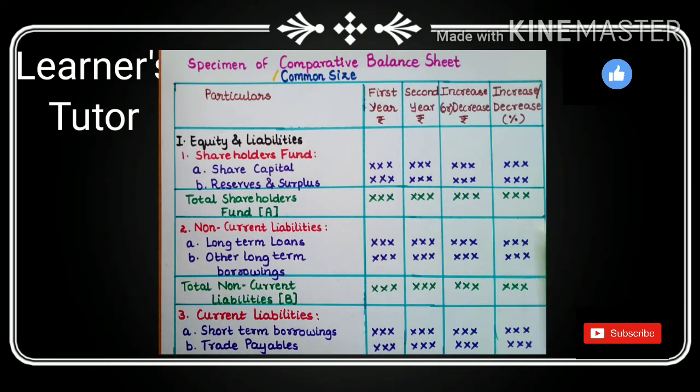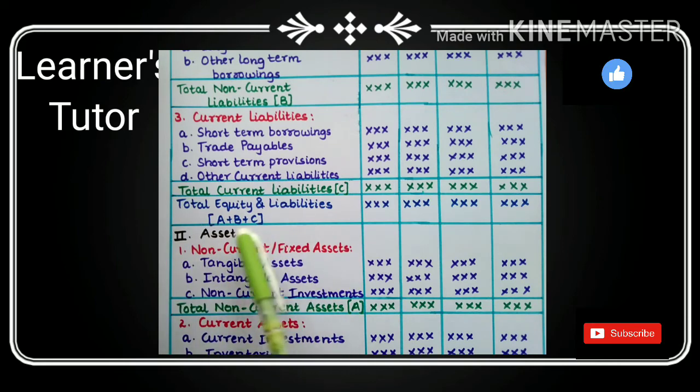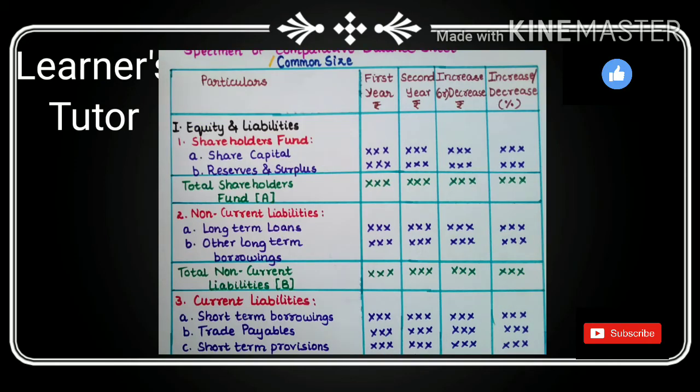Now we have two things here: first is equity and liability, second is assets. Under equity we have shareholders fund, non-current liabilities, third is current liabilities. Under shareholders fund we have two: share capital and reserve and surplus. Add this both will give you total shareholders fund A.